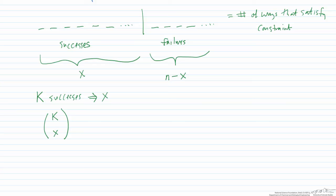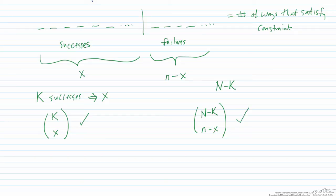Now for failures: we have N minus K possible failures in our population, and we need to place them into n minus x spots. So how many ways can we combine N minus K failures from the population into n minus x spots? It's just a combination: N minus K choose n minus x. We multiply the successes combinations by the failures combinations to get the total number of ways to satisfy the constraint.